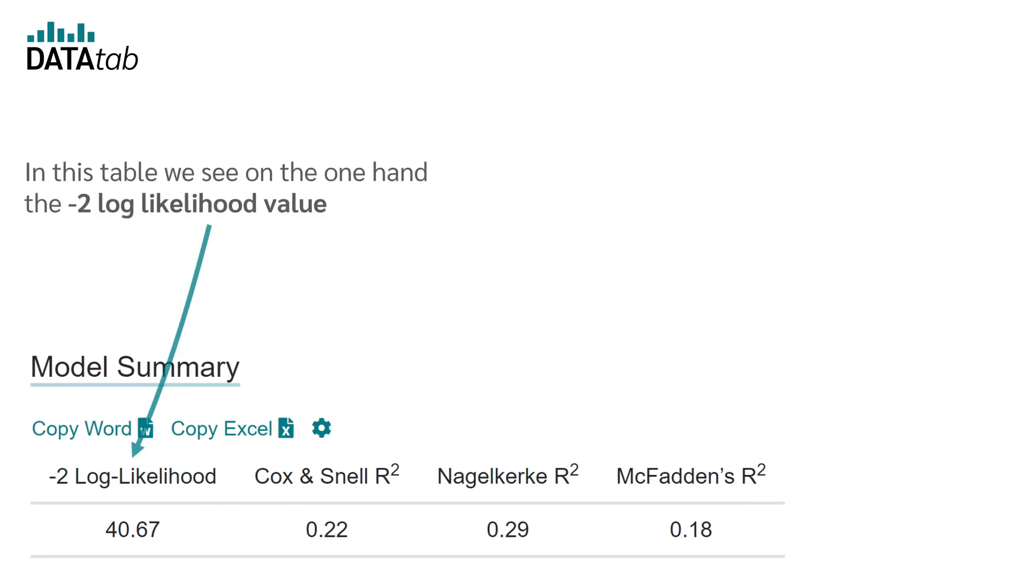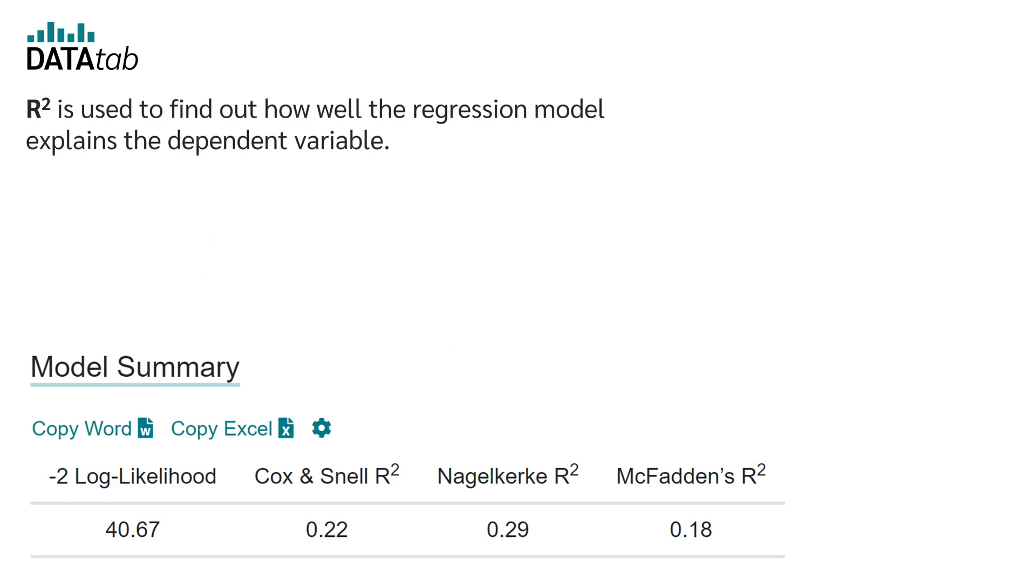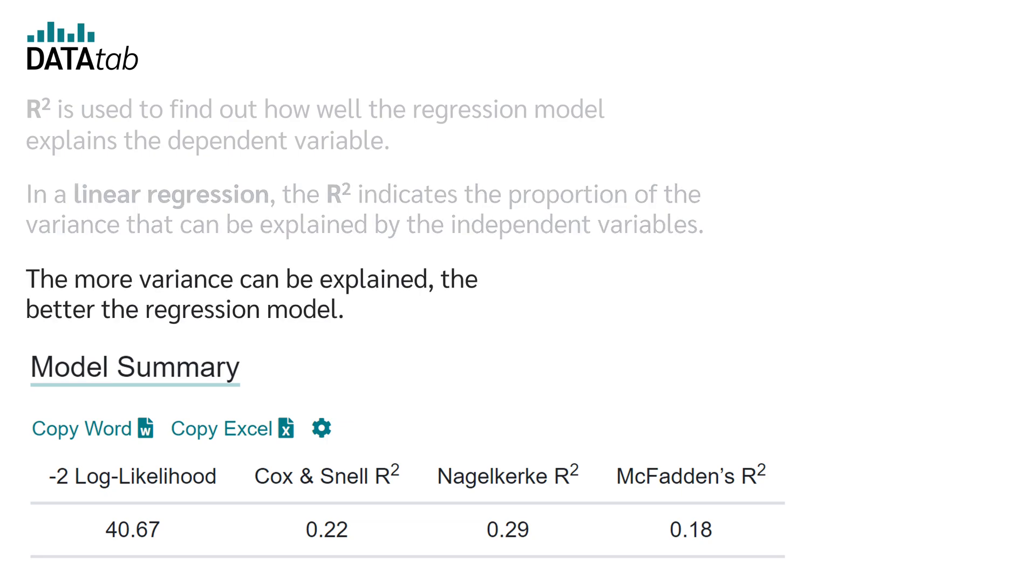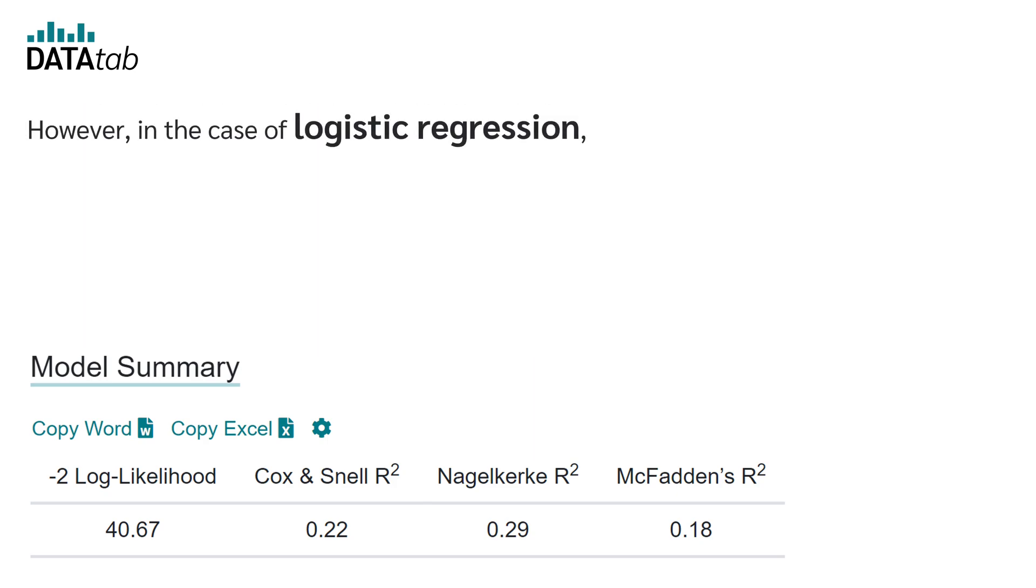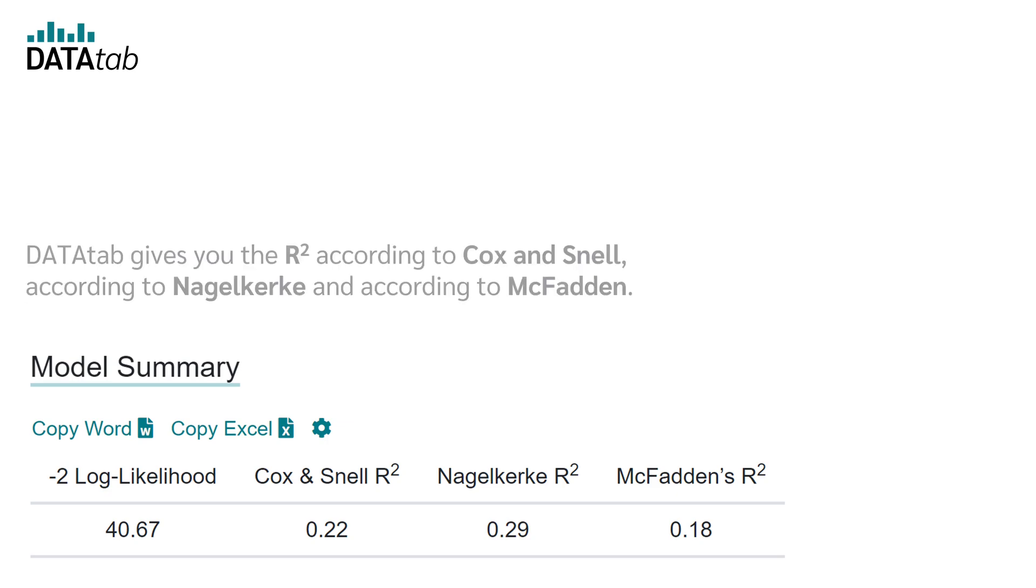Next comes the model summary. In this table, we see on the one hand the minus 2 log likelihood value and on the other hand we are given different coefficients of determination r-square. R-square is used to find out how well the regression model explains the dependent variable. In a linear regression, the r-square indicates the proportion of the variance that can be explained by the independent variables. The more variance can be explained, the better the regression model. However, in the case of logistic regression, the meaning is different and there are different ways to calculate the r-square. Unfortunately, there is also no agreement yet on which way is the best way. Datadap gives you the r-square according to Cox and Snell, according to Nagelkerke and according to McFadden.